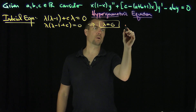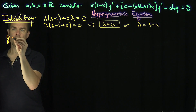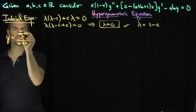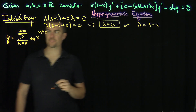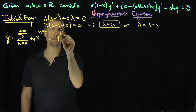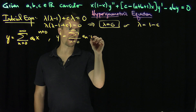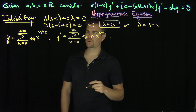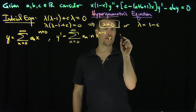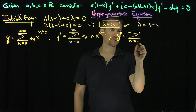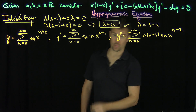The roots of the indicial equation are lambda equals 0 or lambda equals 1 minus c. We're going to focus on the lambda equals 0 case, which gives a solution of the form y equals the sum from n equals 0 to infinity of e_n x^n — a regular Maclaurin expansion. So y prime is the sum from n equals 0 to infinity of e_n times n times x^(n-1), and y double prime is the sum from n equals 0 to infinity of n times (n minus 1) e_n x^(n-2). We'll leave the series starting at 0 and shift indices later.